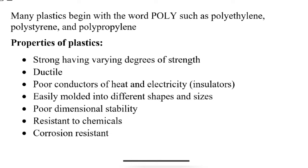What are the basic properties of plastics? They have varying strength — every type of plastic has a different strength. They are ductile, and they are poor conductors, acting as insulators which do not conduct heat and electricity.